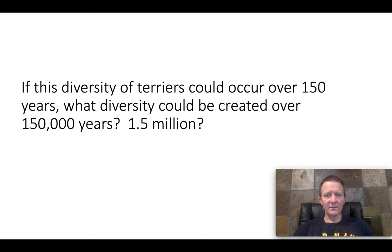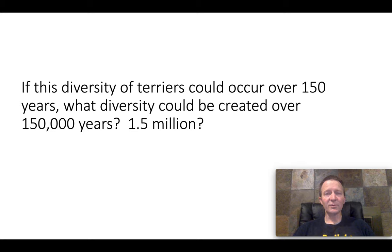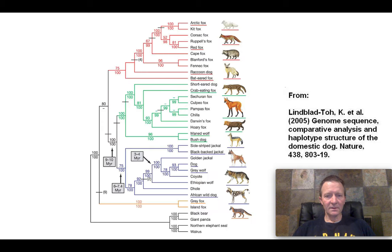Evolutionary biologists pose the question: if this diversity of terriers can be created over 150 years, what if we gave natural selection 150,000 years, or 1.5 million years — how many varieties could be produced? The answer is that at some point we would expect to be able to trace all canines back to one original canine variety.